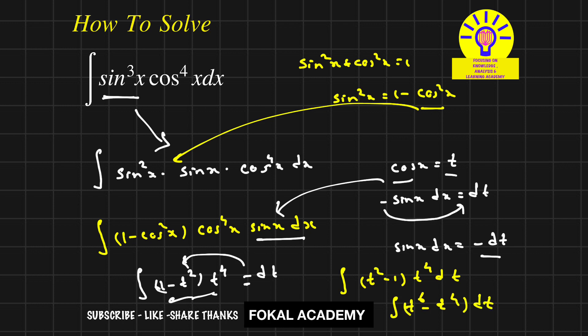We know that integral of x^n dx equals x^(n+1)/(n+1). Now by using this formula, it becomes t⁷/7 - t⁵/5.